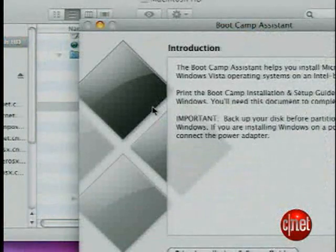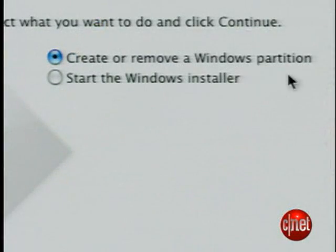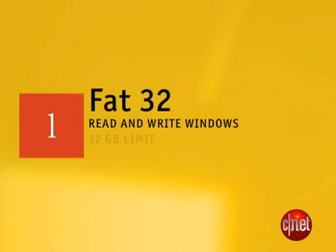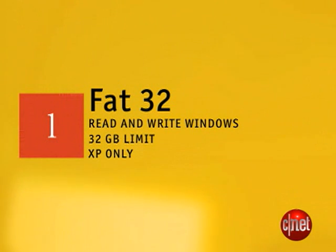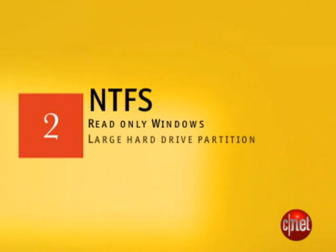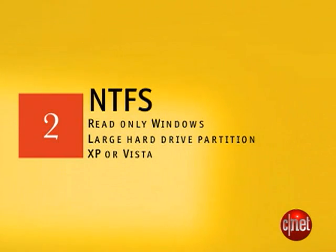The first thing you'll need to do is create a partition for Windows. You'll need to decide what file system you want to use — that's how the data is written to the Windows side. FAT32 lets you read and write your Windows files in OS X, but you're limited to a 32GB partition and you can't use Windows Vista. NTFS limits you to only reading Windows files in OS X, but you can make the hard drive partition larger and you can use either XP or Vista.